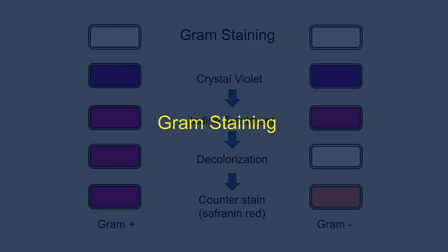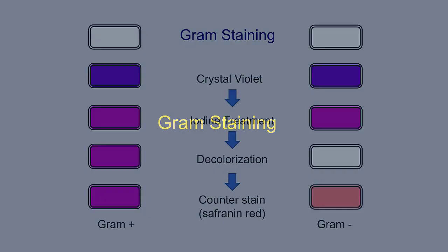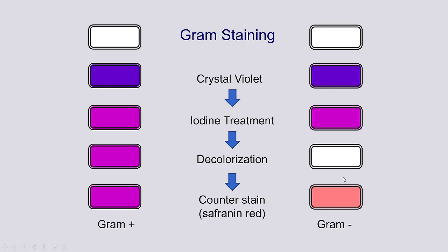Anybody who has taken microbiology lab has most likely done gram staining at one point or another. I'm going to describe the principle behind it and relate that to the cell wall, and what differentiates a gram positive from a gram negative bacteria. This is the typical procedure for gram staining, and on the left I have a gram positive and on the right a gram negative, to see how they respond differently.